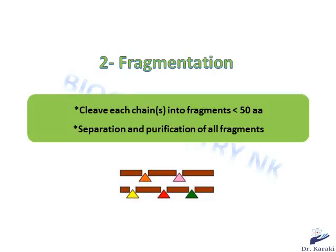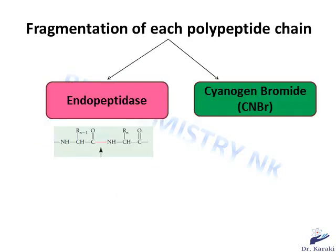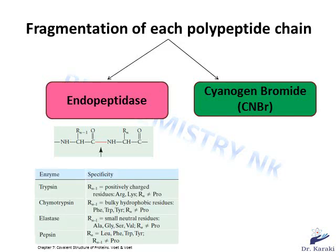The second step consists of fragmenting the polypeptide chain into smaller fragments of less than 50 amino acids, then separating and purifying these fragments. To fragment the polypeptide chains, we can use a chemical technique like cyanogen bromide, or an enzymatic technique using endopeptidases. Endopeptidases cleave peptide bonds, and each type has its own specificity. For example, trypsin will cleave the peptide bond at the carboxyl end of positively charged amino acids like arginine and lysine, provided the next amino acid is not proline.